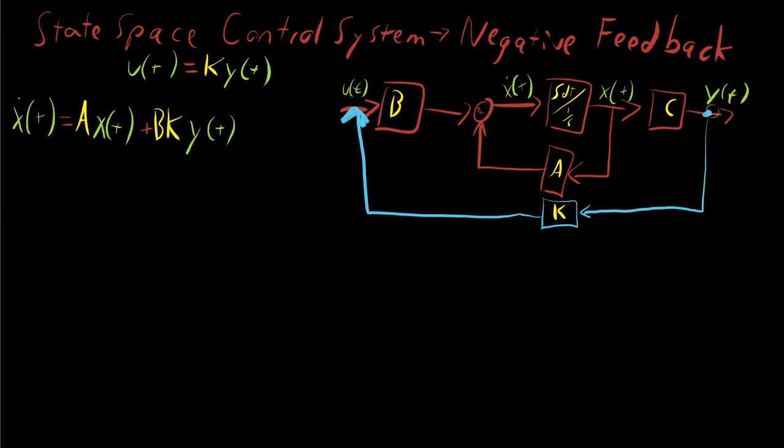It's k times y, and then it gets multiplied by b. So it's b times k times y of t. That then gets added into A times x of t to get x dot of t.